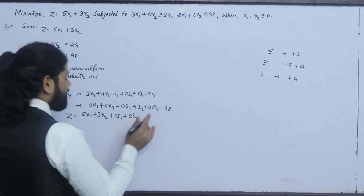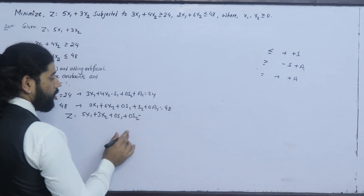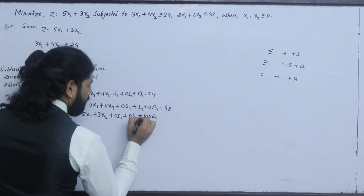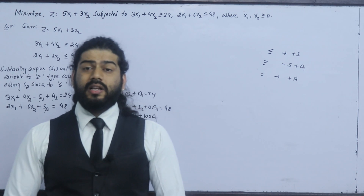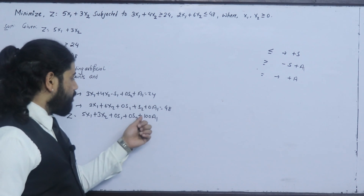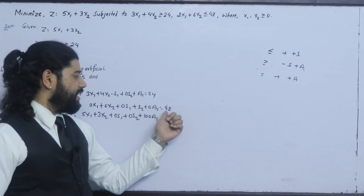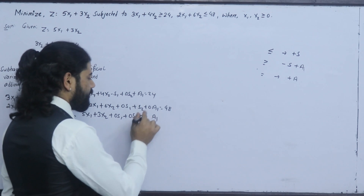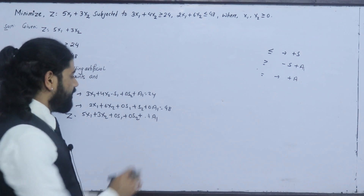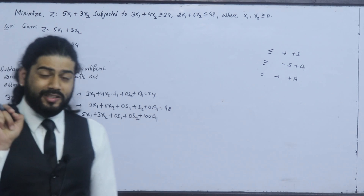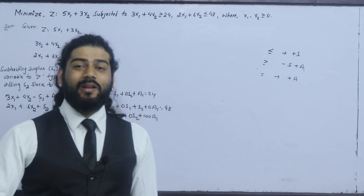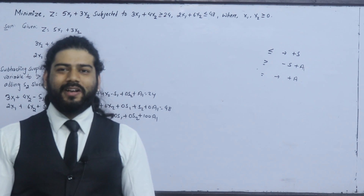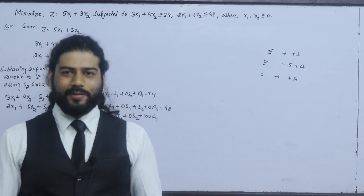So let's compare: in maximization, we write the objective function z with minus coefficients. In minimization, the difference is in how we treat the artificial variable. For maximization, we subtract M times the artificial variable; for minimization, we add plus M times the artificial variable. This is the key difference in the objective function between maximization and minimization using the simplex method.